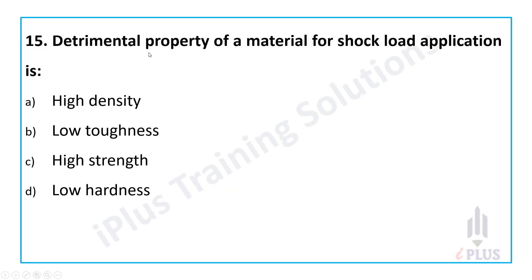Fifteenth question: the detrimental property of a material for shock load application is high density, low toughness, high strength, or low hardness. The answer is low toughness — for shock absorbers and fatigue loading, high carbon steels are used.